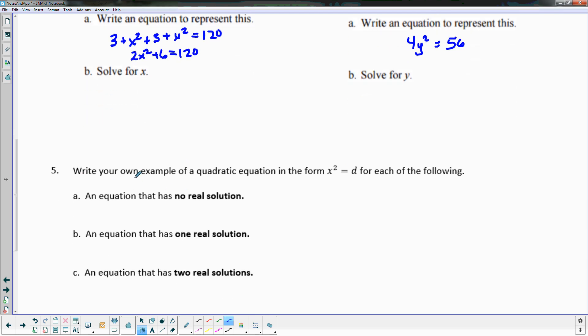Number 5 says write your own example of a quadratic equation in the form x² = d, where d is just a number - that's all I want here is a number - that has each of the following: no real solutions, one real solution, and two real solutions.